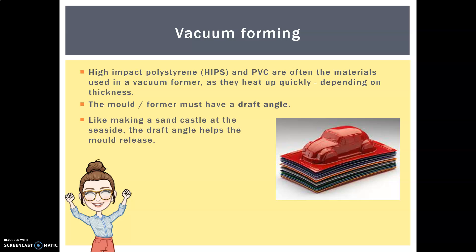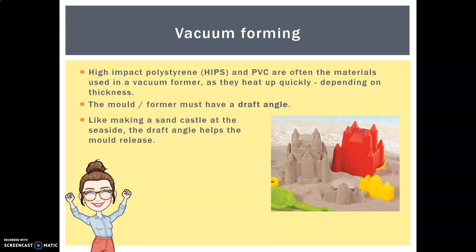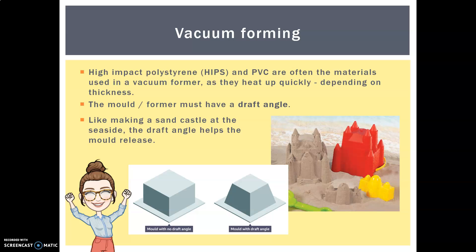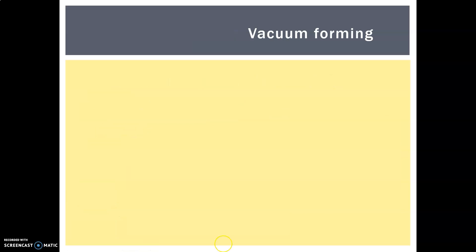In each case you have a mould or former, usually made of something like MDF or plywood. These have a draft angle. Think back to when you were a kid with a sandcastle bucket — from top to bottom there is a taper, just by a few degrees. This draft angle helps the sand come off the bucket, and in vacuum forming it helps the plastic come off the former. Here's an exaggerated example: one completely flush, and one with a draft angle.